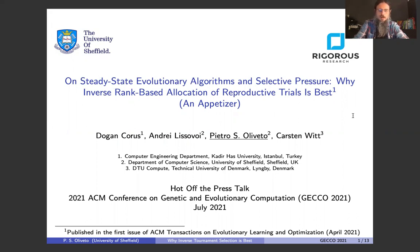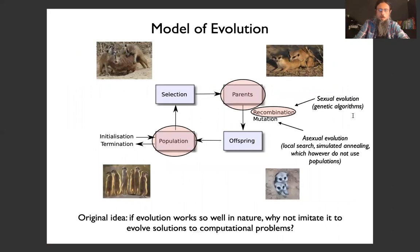I was invited by the Editor-in-Chief of the new journal ACM Transactions on Evolutionary Learning and Optimization to present this paper, which has appeared in the first issue of the journal. Given the time constraints, I'm just going to give you an appetizer of the paper. I guess it is fair to say that the idea behind the invention of evolutionary and genetic algorithms is that if evolution works so well in nature, then why not imitate it to evolve solutions to our computational problems?